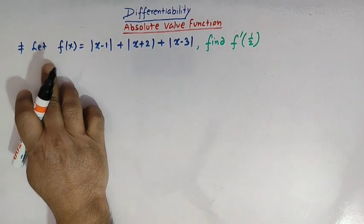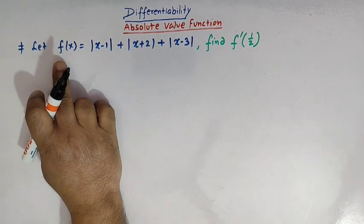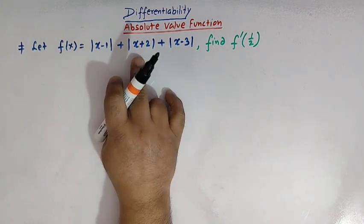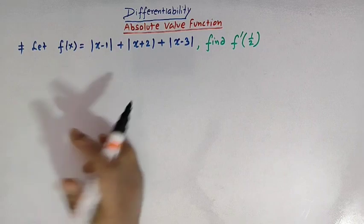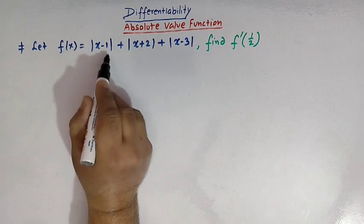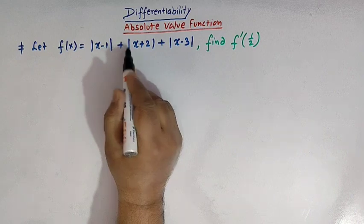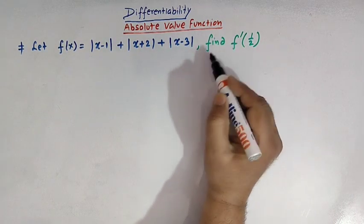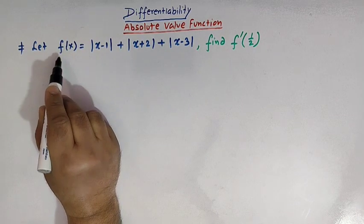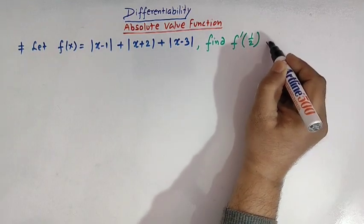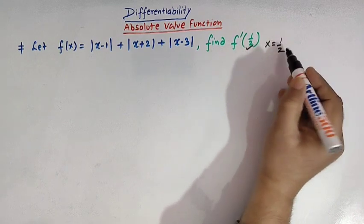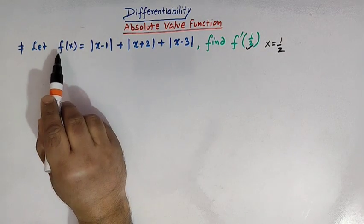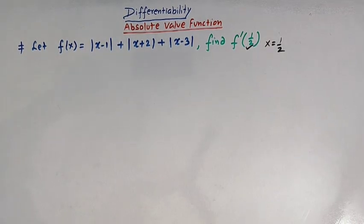We have a problem where we are given a function f of x, and this function is a sum of three absolute value functions. So f of x is equal to mod of x minus one, plus mod of x plus two, plus mod of x minus three, and we have to find the derivative of this function f of x at x is equal to one half.